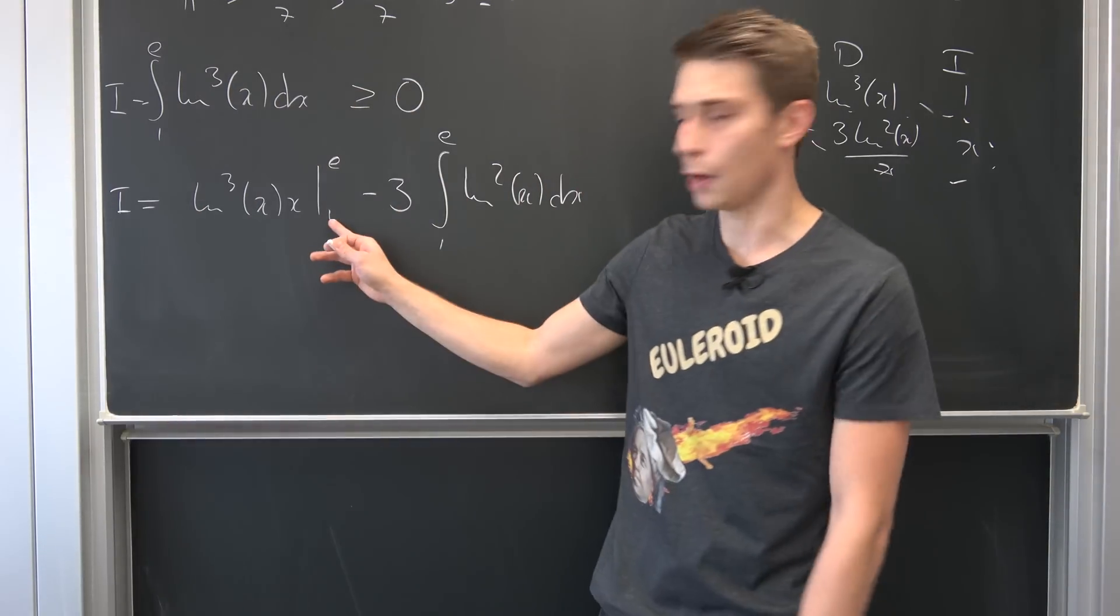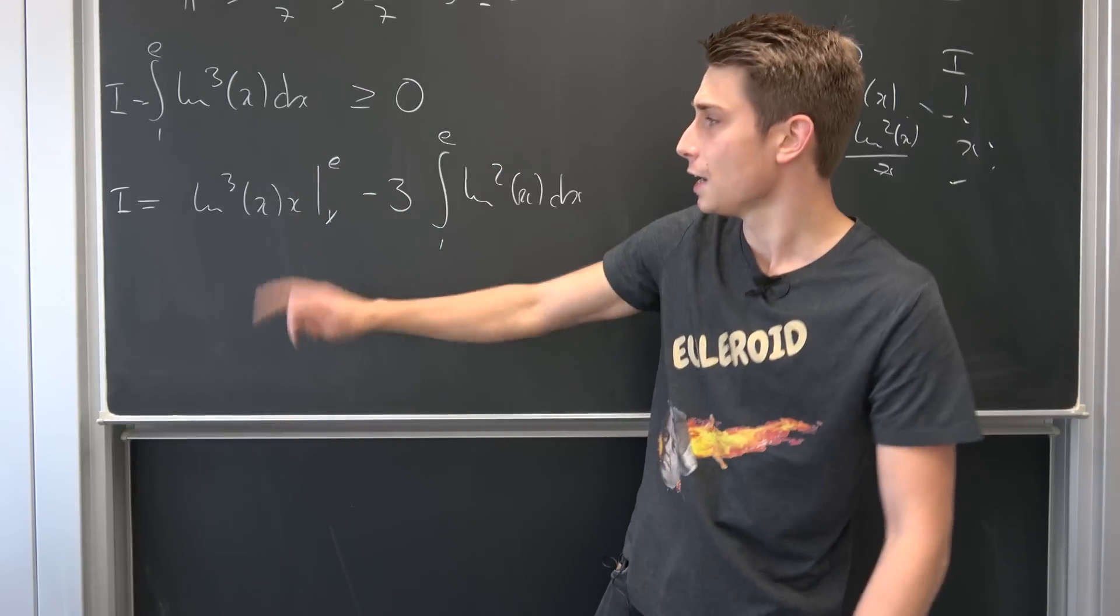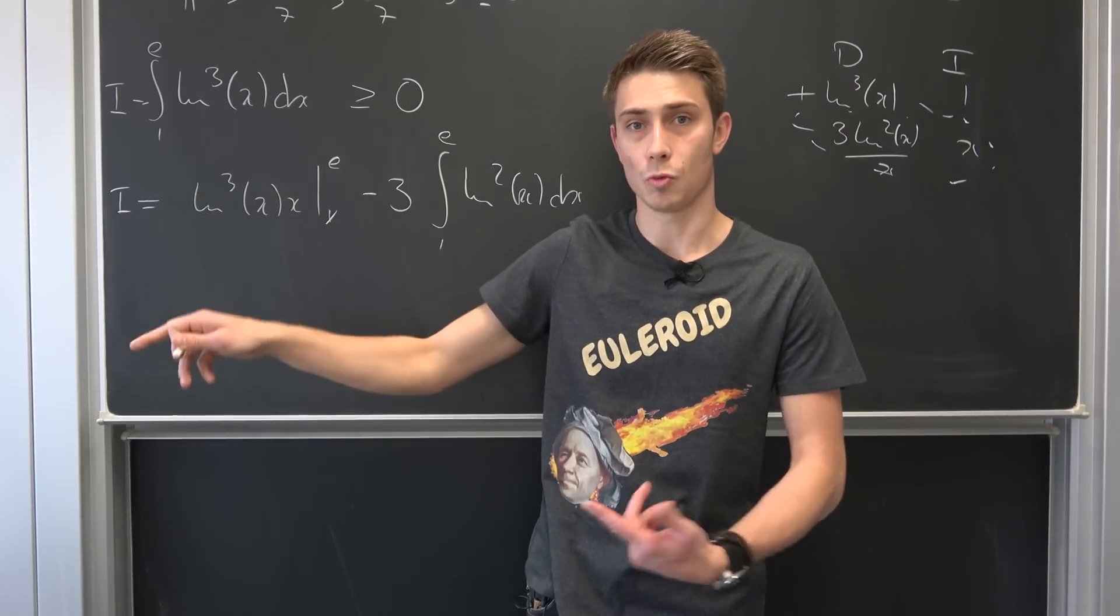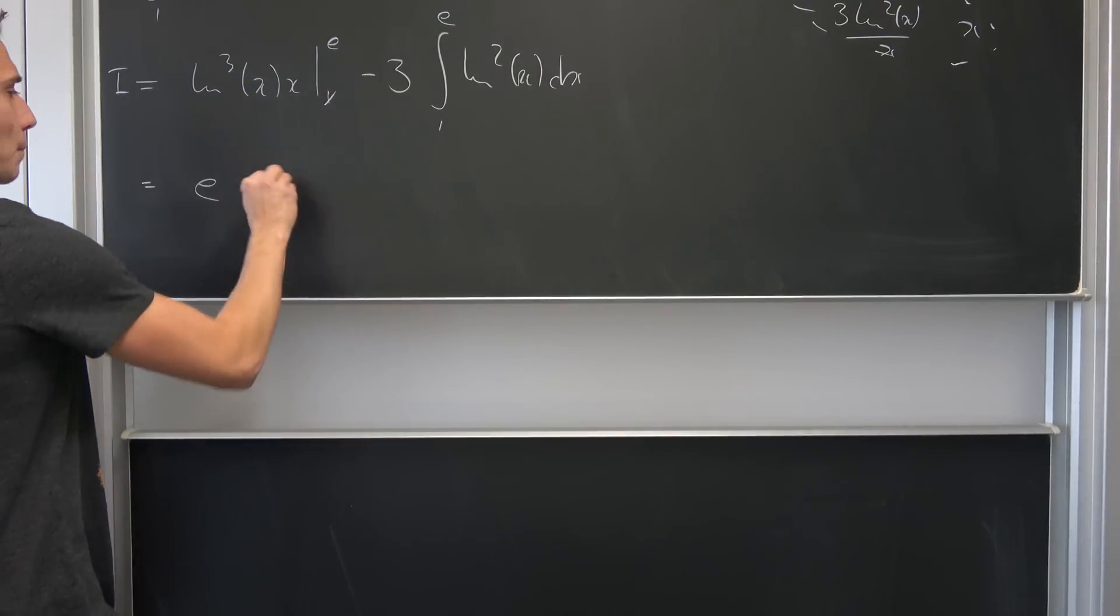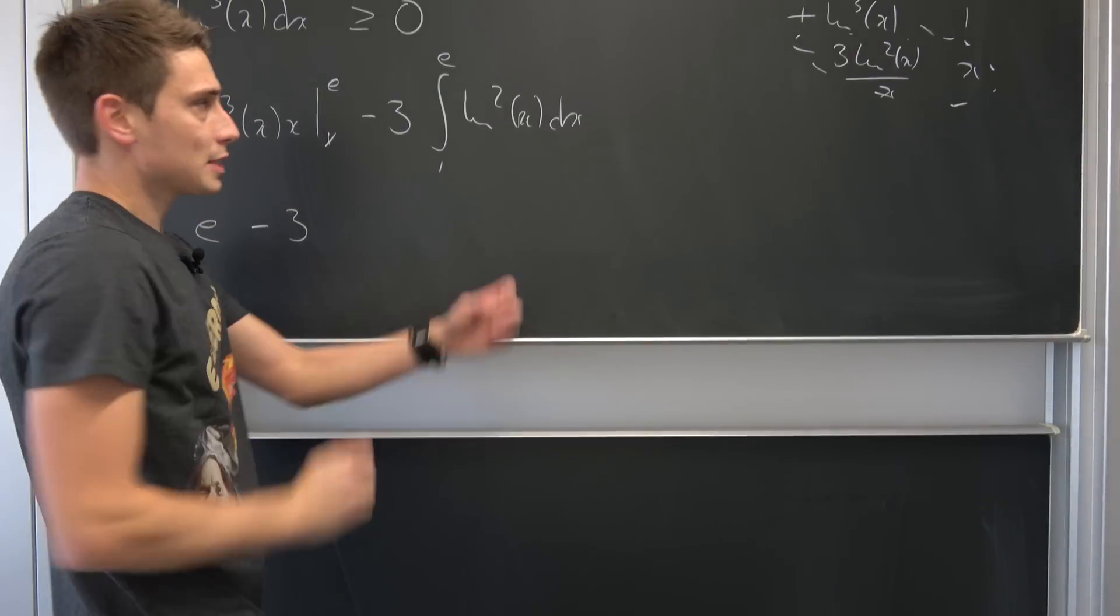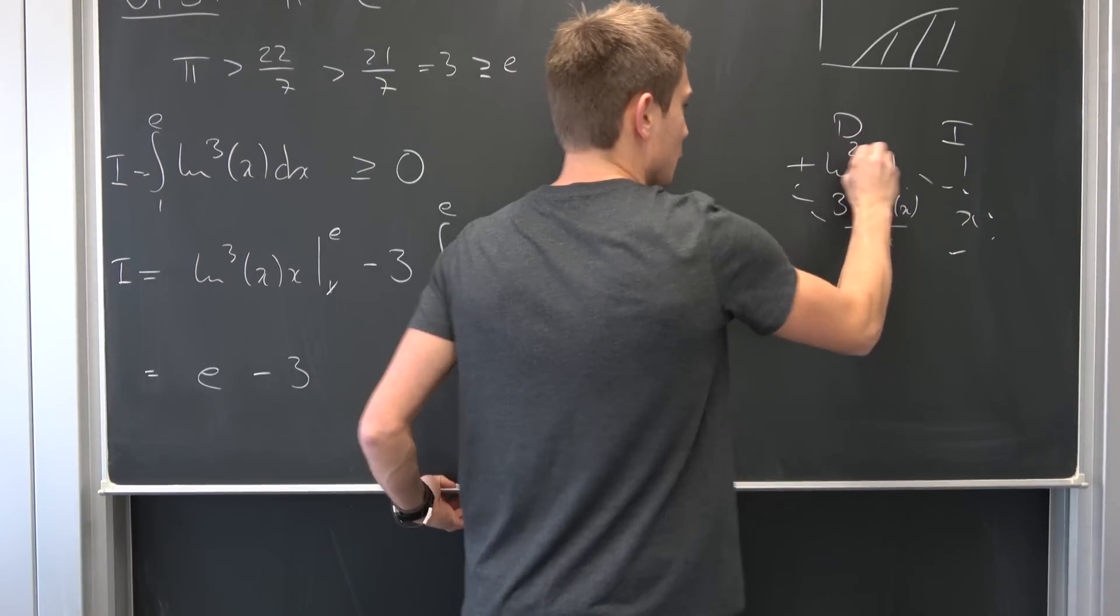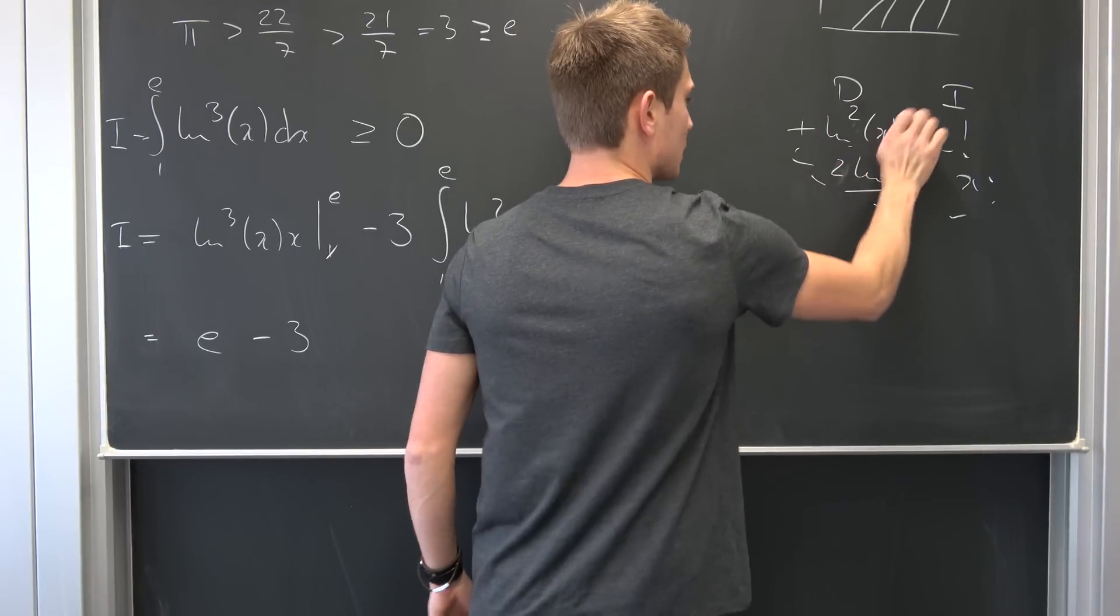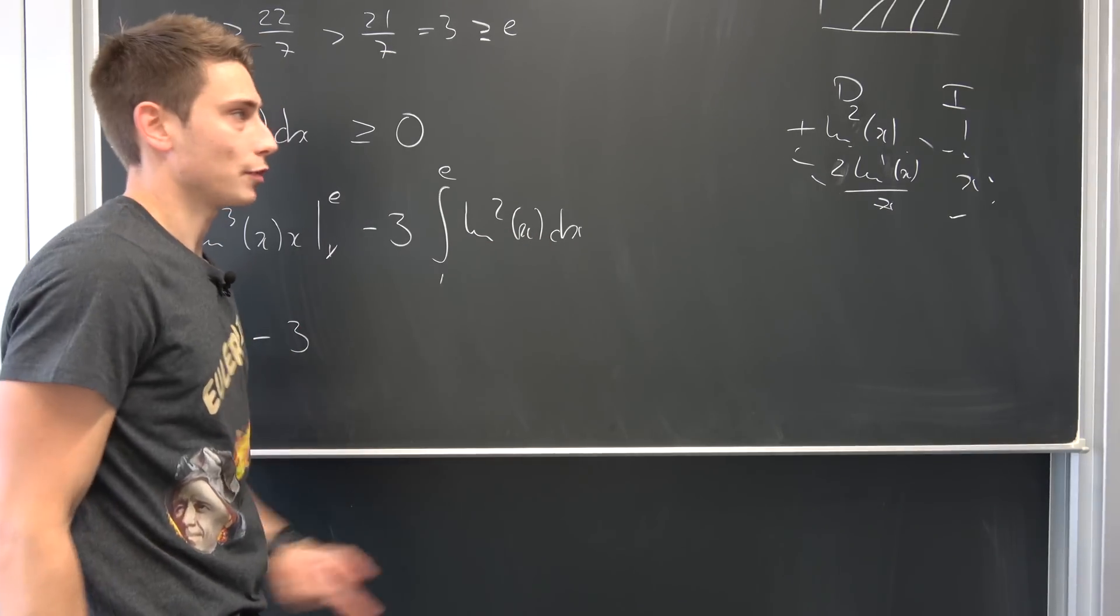Okay, you see, lower bound 1, natural log of 1 is 0. So this is going to vanish. Natural log of e is 1, 1 cubed is still 1. So this thing right here is going to aggregate to e minus 3 times. And once again we have to use integration by parts. So let's just change this right here into a 2. So a 2 is going to get dragged down. This is going to reduce to a 1. And then we already came pretty far. Don't forget to drag your negative 3 into everything.